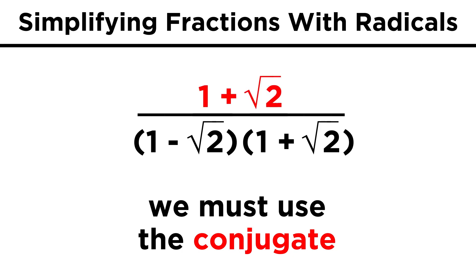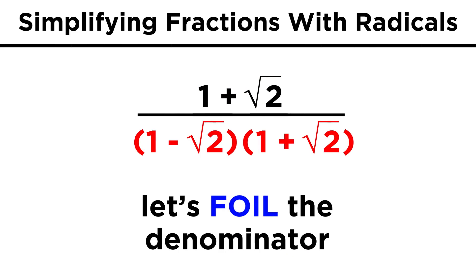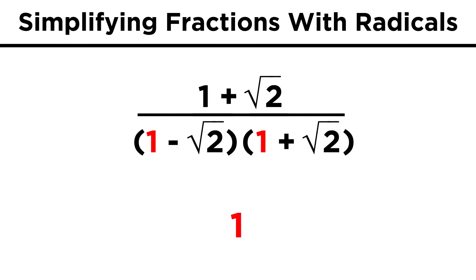The numerator simply becomes this term, and then on the bottom we can foil this out. One times one is one, then we get plus root two and minus root two, and lastly negative root two times root two, which will simply be negative two.